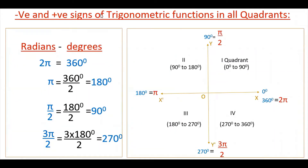Now I am going to tell the signs of all trigonometric functions in all quadrants in the 2D x-y coordinate system. Before that, we need to learn the difference between radians and degrees, because from now onwards you have to work with radians. Remember: 2π = 360°, so π = 180°, and π/2 = 90°.